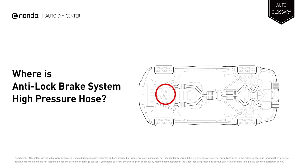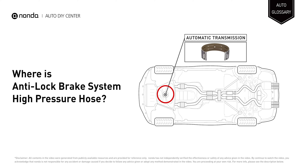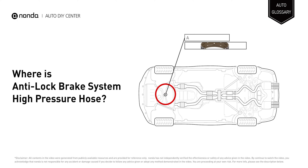The band is installed on the gearbox casing. One end of the band is connected to the casing itself, while its second end is linked up with the running piston of the servo unit.